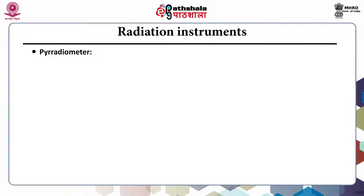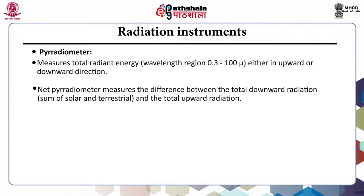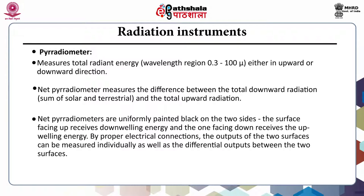Next is the pyrradiometer. It measures total radiant energy — including short wave plus long wave — in the wavelength range 0.3 to 100 microns, in either upward or downward direction. In the case of a net radiometer, it measures the difference between total downward radiation and total upward radiation. Net pyrradiometers are uniformly painted black on two sides; the surface facing up receives downwelling energy and the one facing down receives upwelling energy. By proper electrical connections, the outputs of the two surfaces can be measured individually as well as the differential output between them.